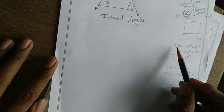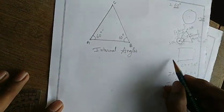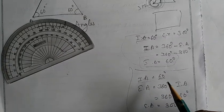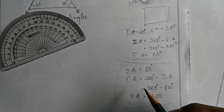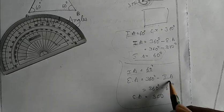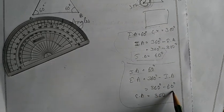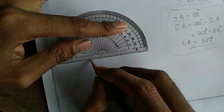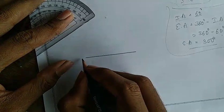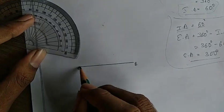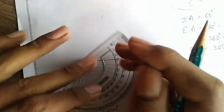We have the usage formula. The internal angle is 60 degrees. The external angle formula: 360 minus 60 degrees gives us 300 degrees. For example, with a triangle, we have external angles summing to 180 degrees. Each internal angle is 60 degrees, and the corresponding external angle is 300 degrees.